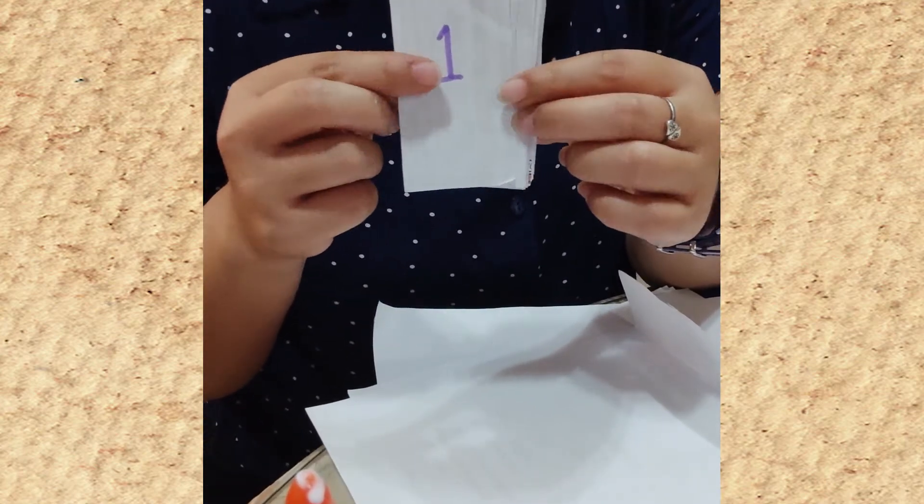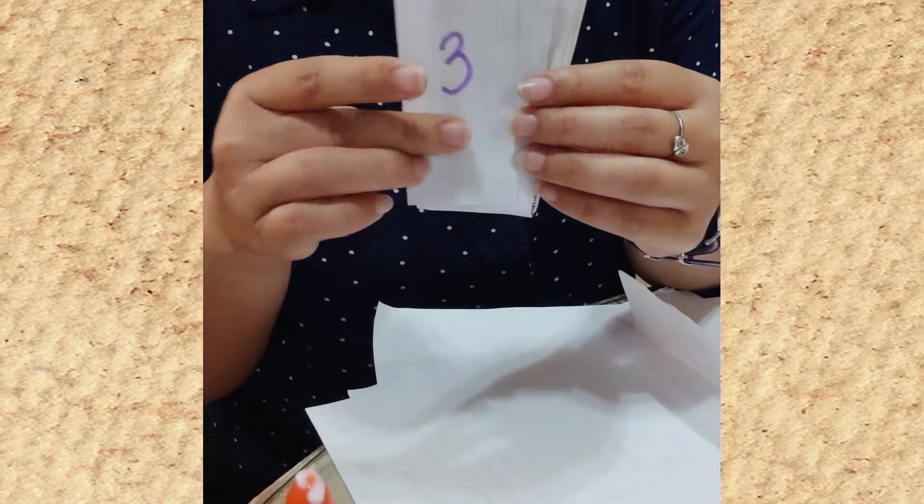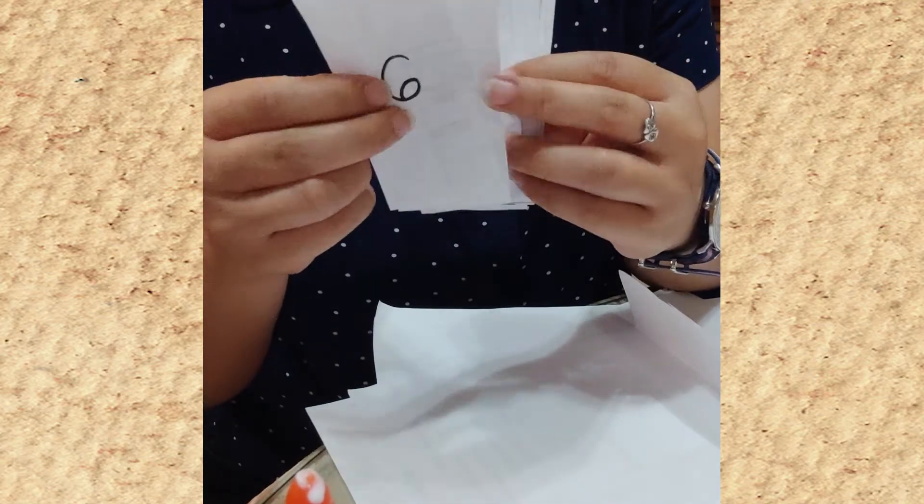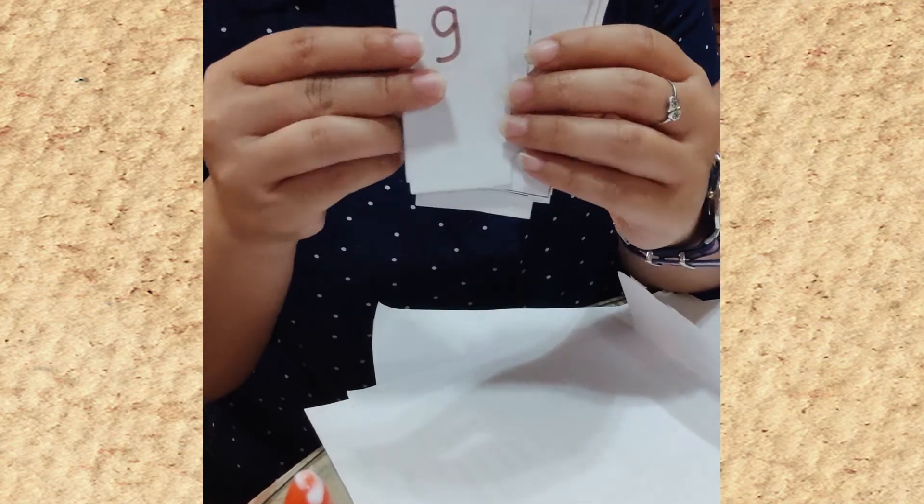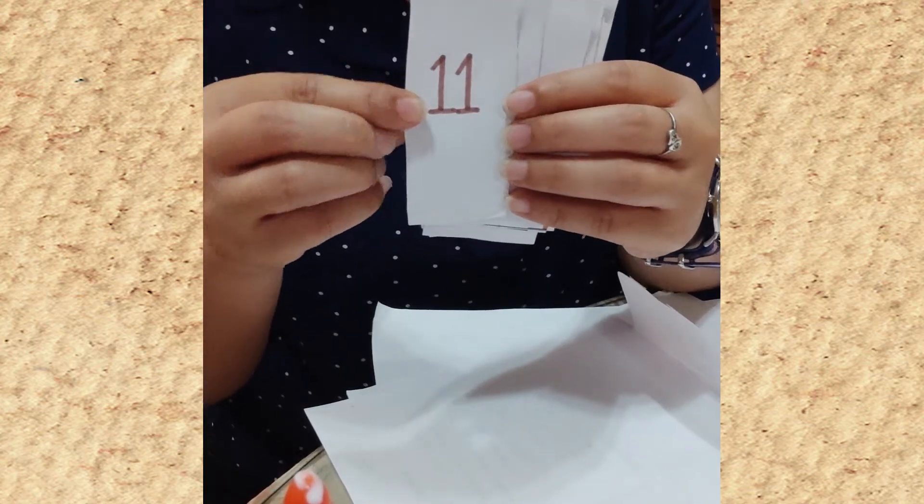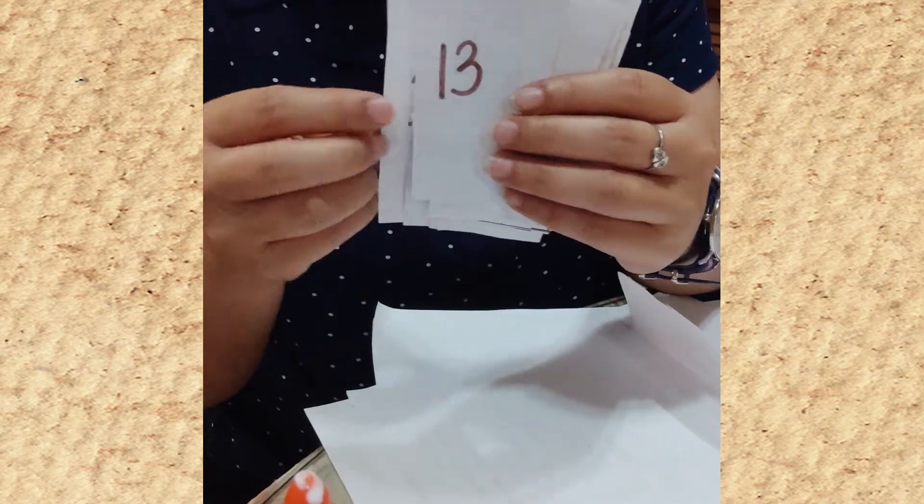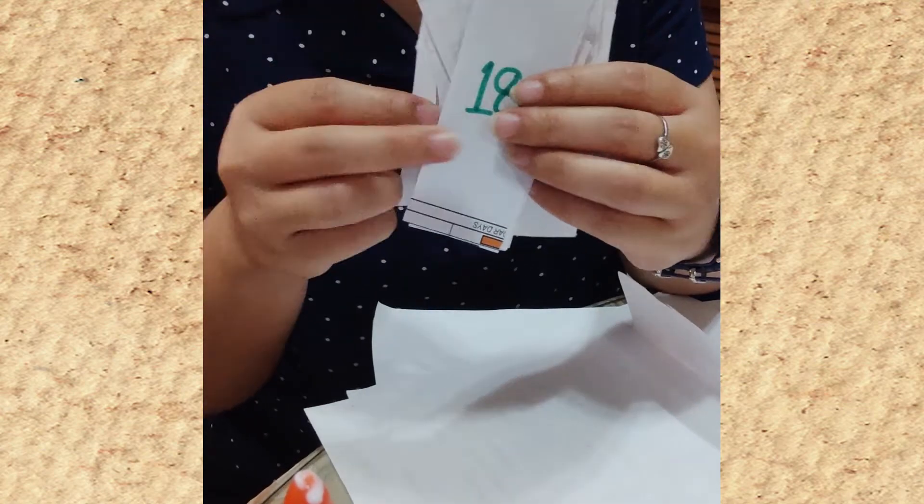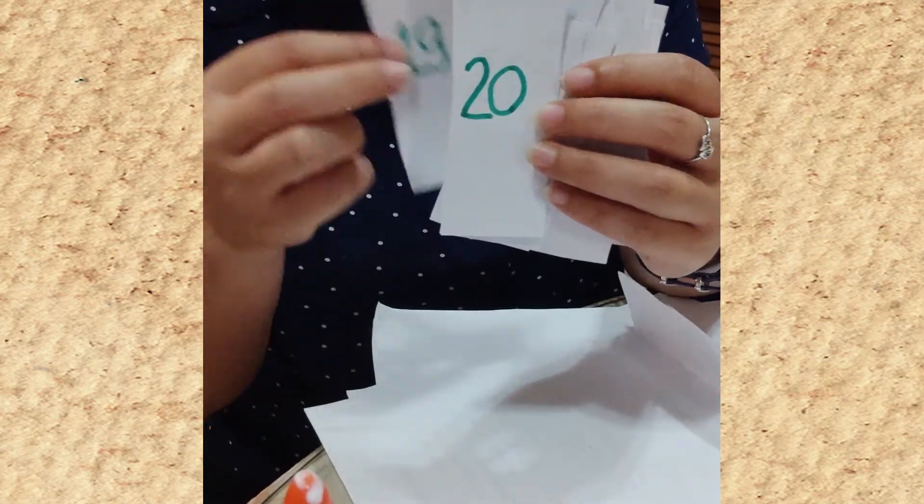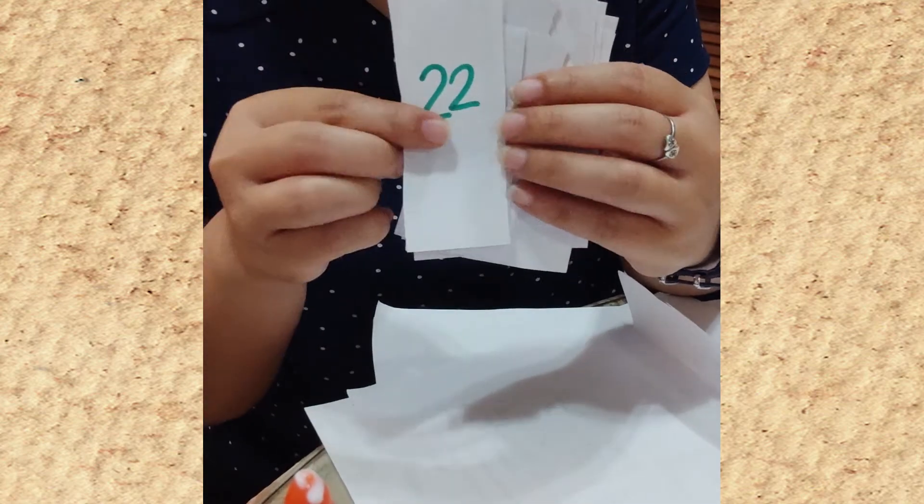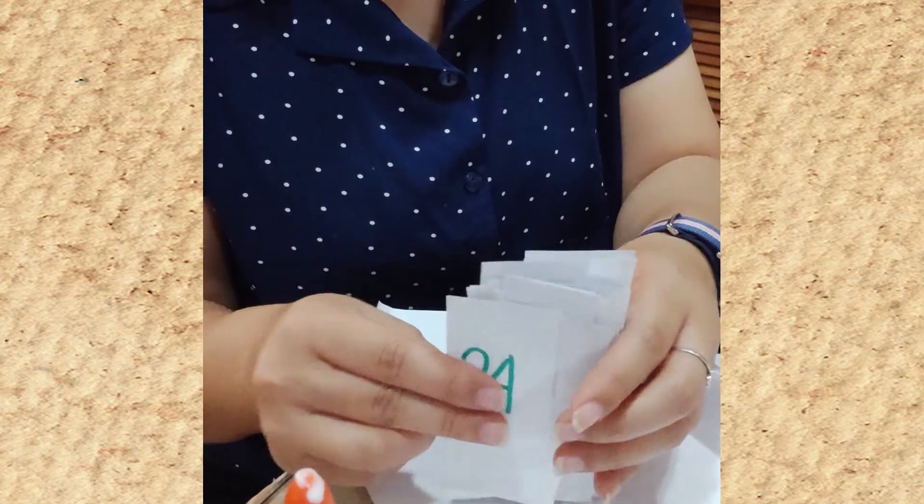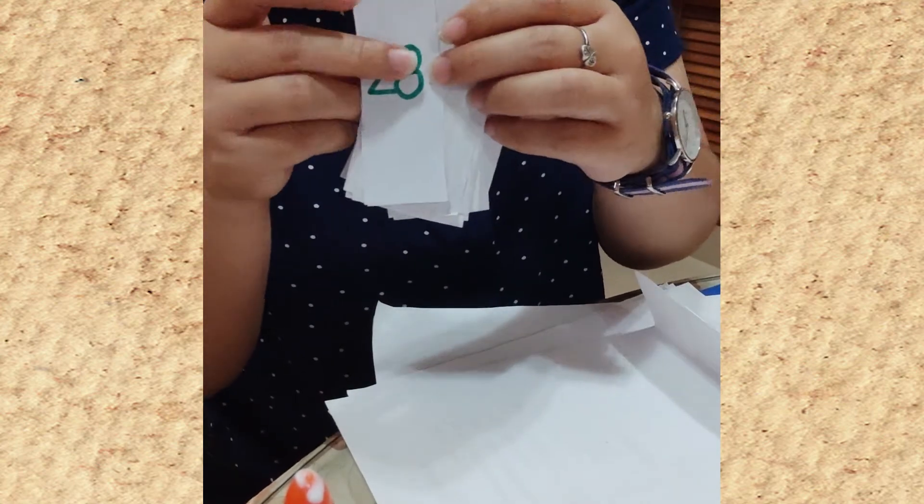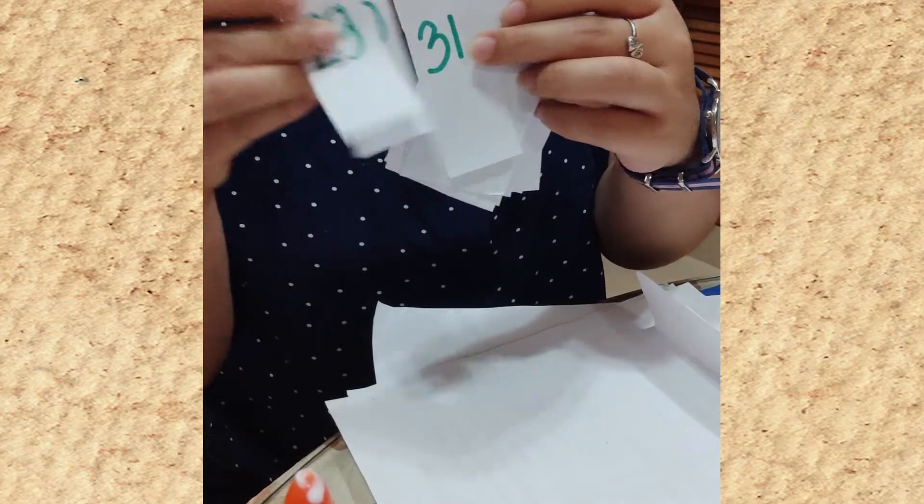Then, write down 1 to 31. 1, 2, 3, 4, 5, 6, 7, 8, 9, 10, 11, 12, 13, 14, 15, 16, 17, 18, 19, 20, 21, 22, 23, 24, 25, 26, 27, 28, 29, 30, 31.